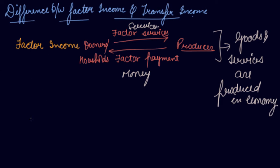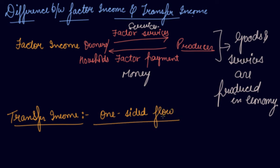Next, I'm talking about your transfer income. Transfer income is a one-sided flow. You do not render any services, but you get something known as the unilateral payments, that is, one-sided payments.